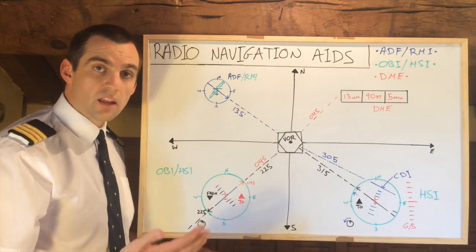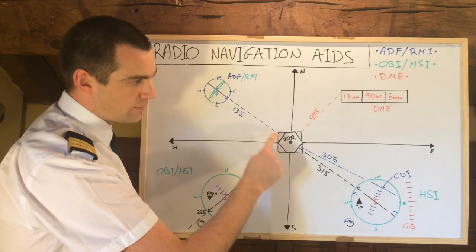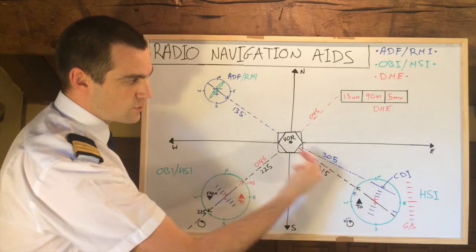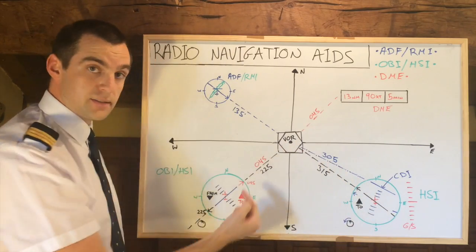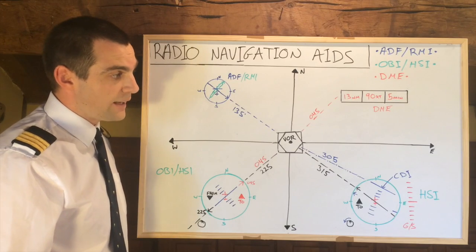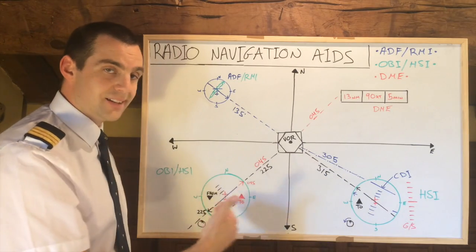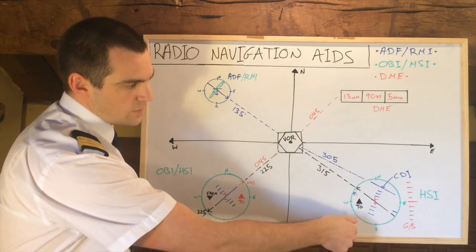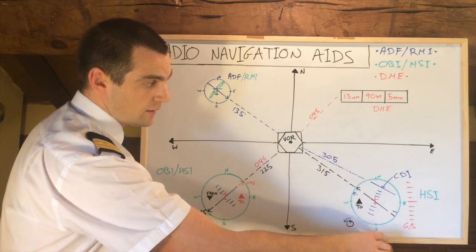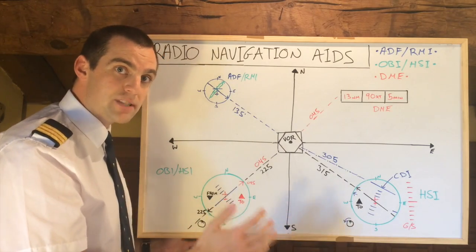The CDI indicator is another point of confusion. In this example, we are on radial 135 and have turned our course selector to 315 — the reciprocal of 135 — giving us a 'to' indication. If we turned left to 315 we would fly direct to the station and the CDI would be centered. Now, if we wanted to fly inbound to the station on heading 305, we would select 305 as our desired course by turning the course selector slightly to the left. That CDI course deviation would shift off to one side.